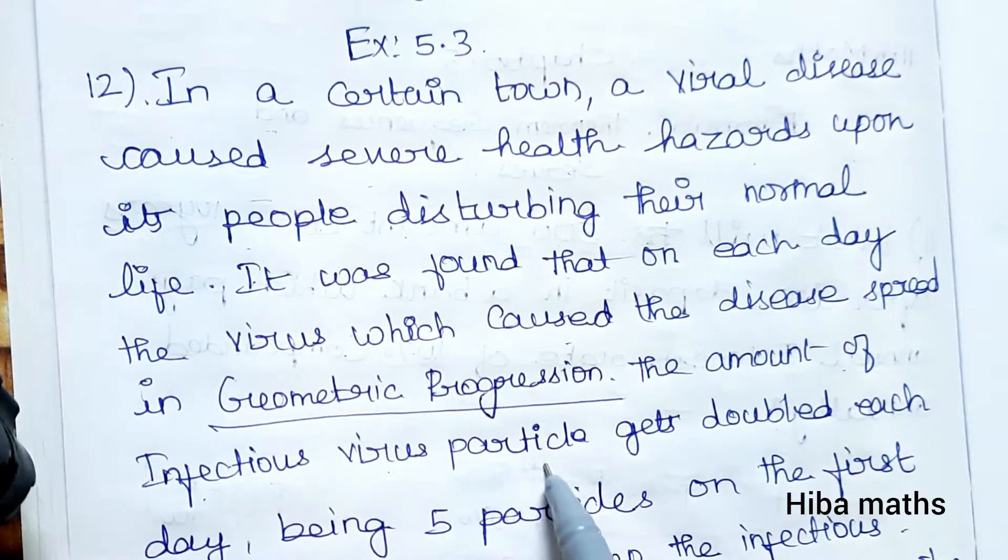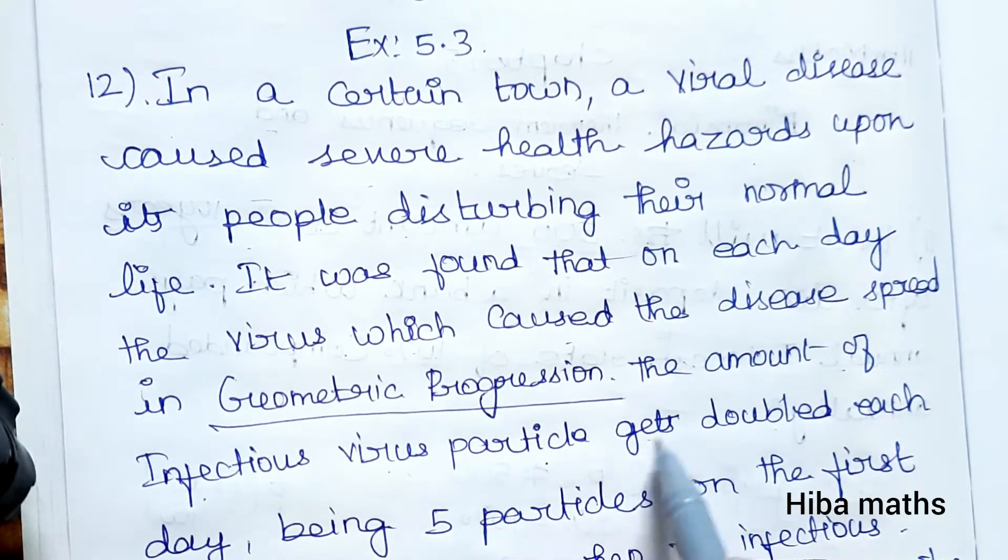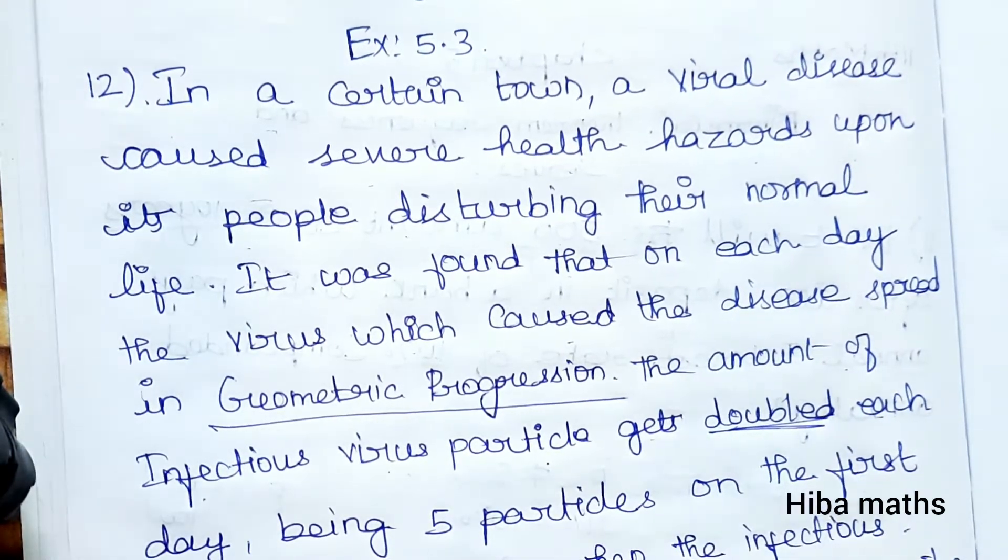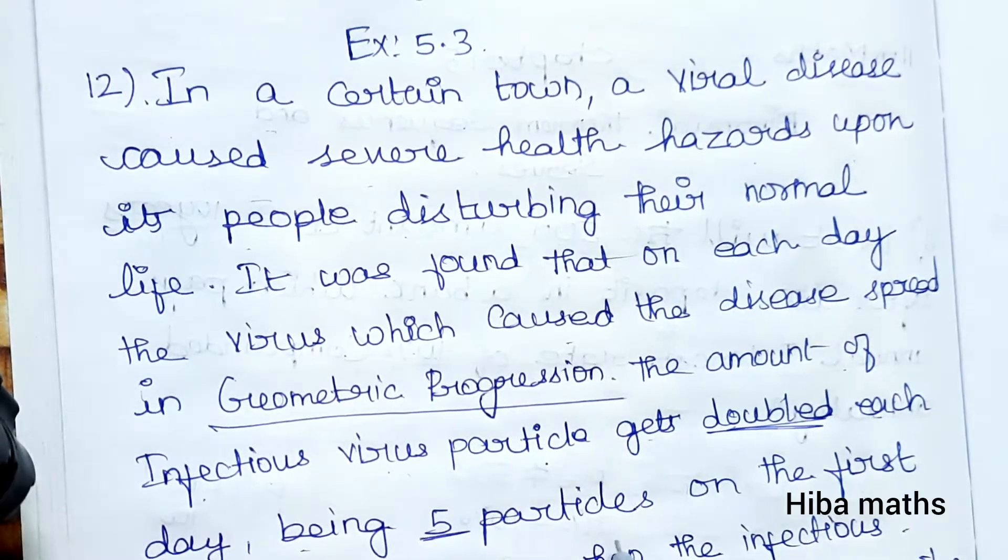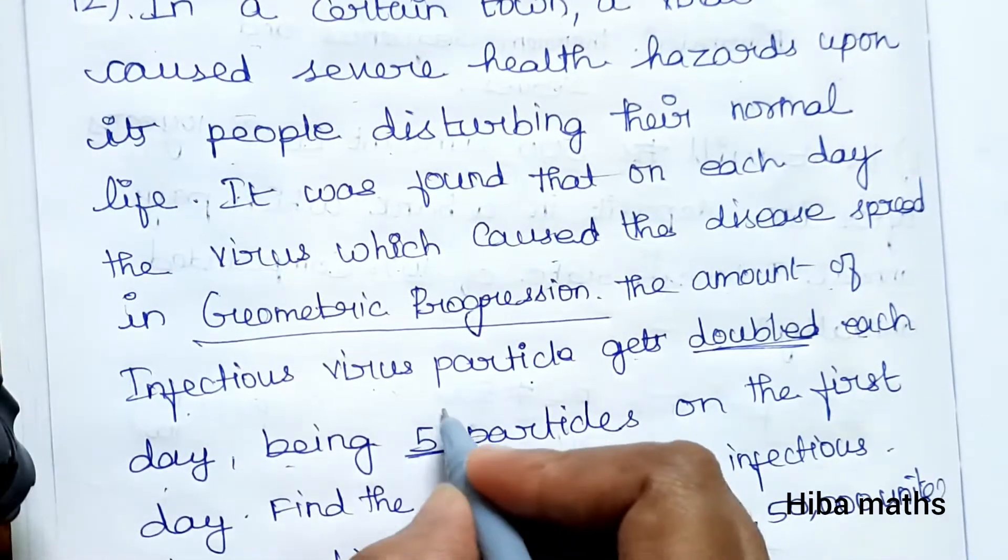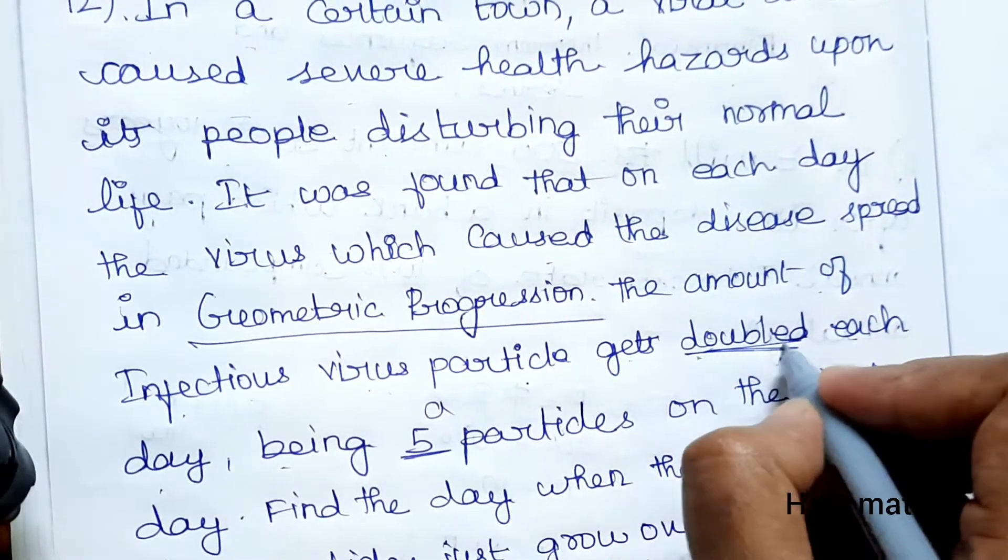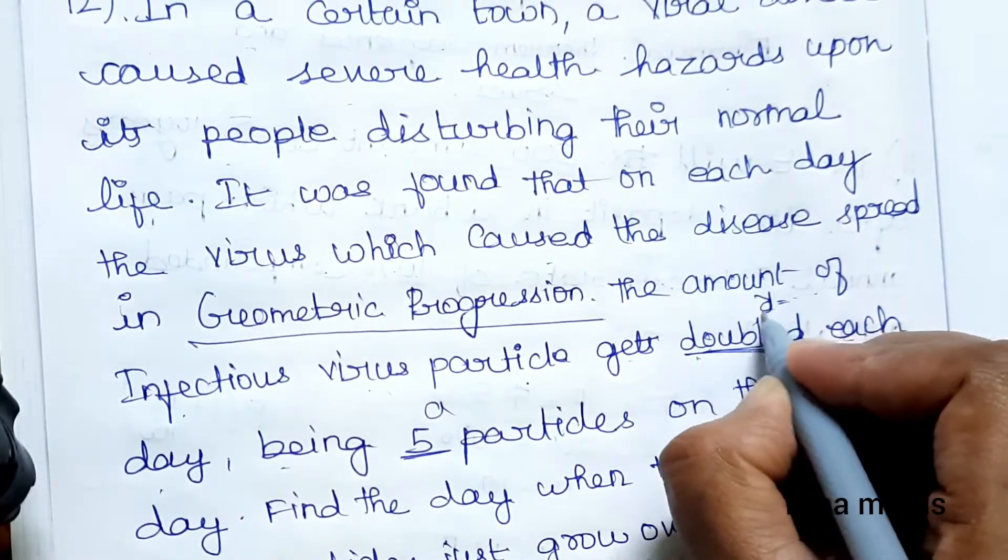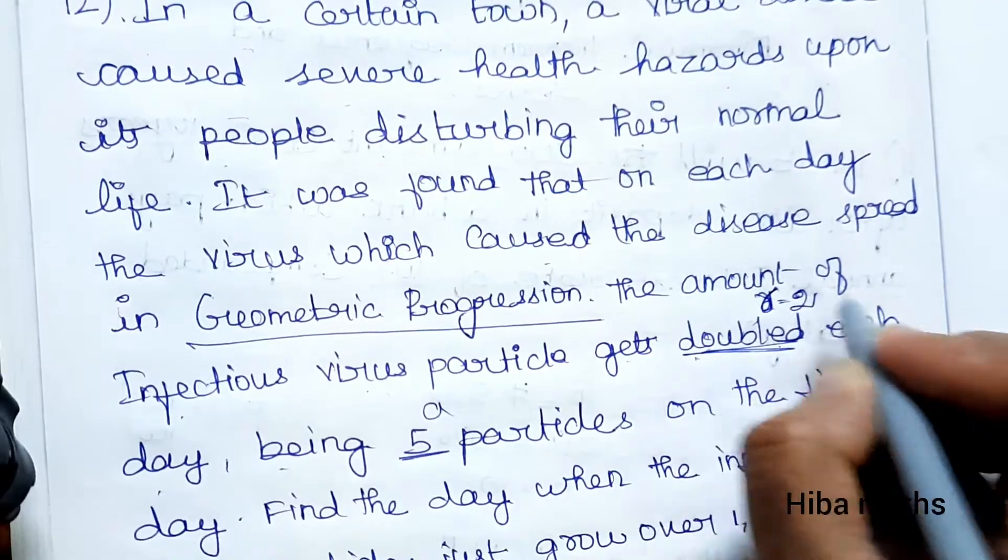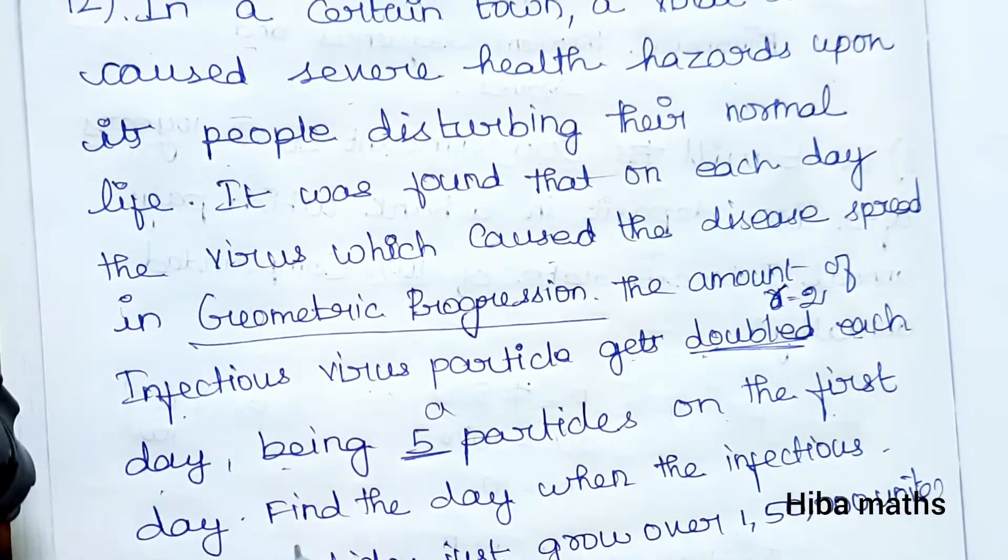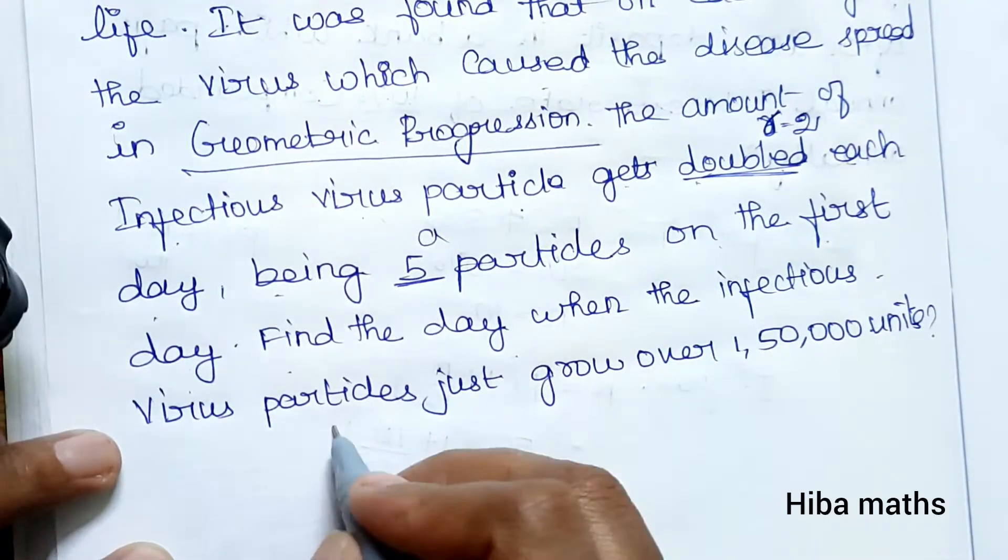The amount of infectious virus particles gets doubled each day, being five particles - starting value five and doubled each day. So the first term a is 5 and the common ratio r is 2.